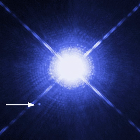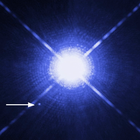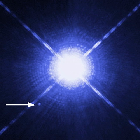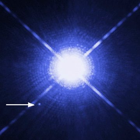Although white dwarfs are known with estimated masses as low as 0.17 and as high as 1.33 solar masses, the mass distribution is strongly peaked at 0.6 solar masses, and the majority lie between 0.5 and 0.7 solar masses. The estimated radii of observed white dwarfs are typically 0.8 to 2% the radius of the Sun, comparable to Earth's radius of approximately 0.9% solar radius. A white dwarf thus packs mass comparable to the Sun's into a volume typically a million times smaller. The average density must therefore be roughly one million times greater than the Sun's, approximately 10⁶ grams per cc, or 1 ton per cubic centimeter. A typical white dwarf has a density of between 10⁴ and 10⁷ grams per cc.